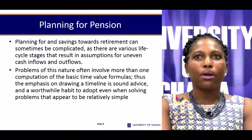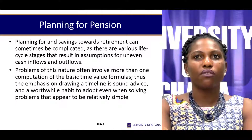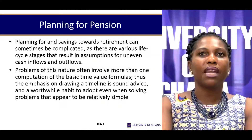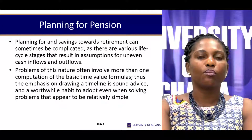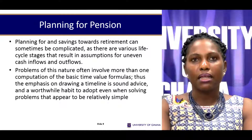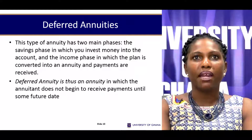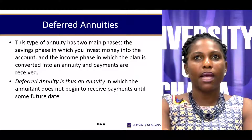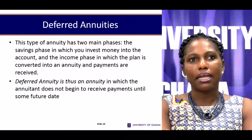With an estimate of how long you'll live after retirement and how much money you need each period, you can extrapolate to determine how much must be available when you go on retirement, and by extension how much you should start putting away today to achieve that. This comes under what we refer to as a deferred annuity — having determined how much income you need in the future, you need to know how much you must save to generate that income flow.